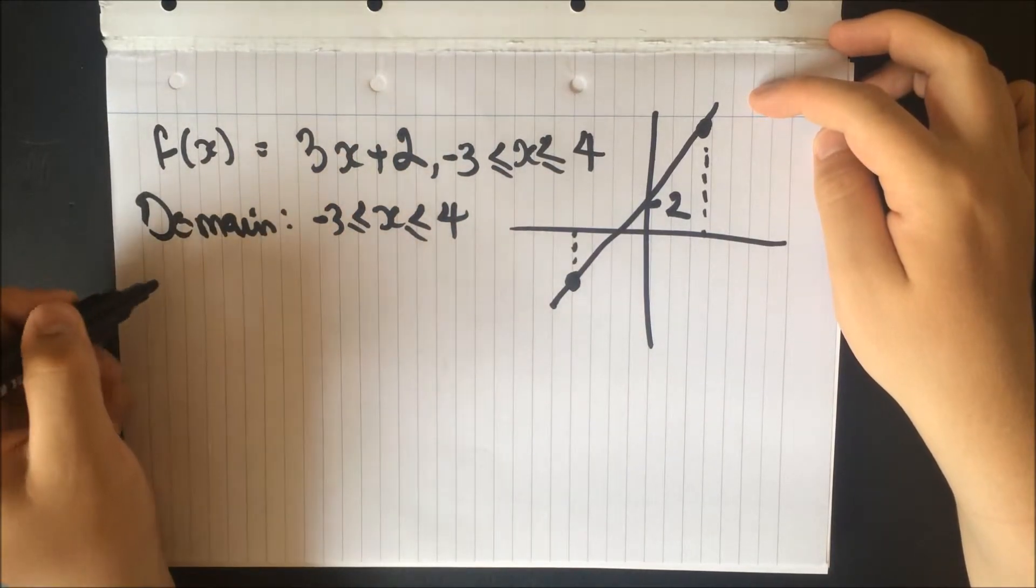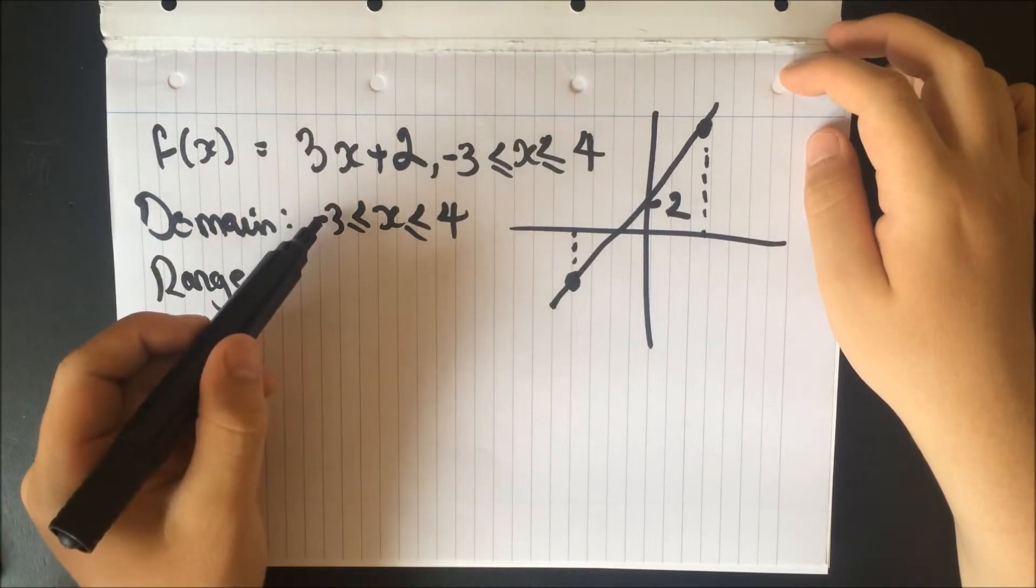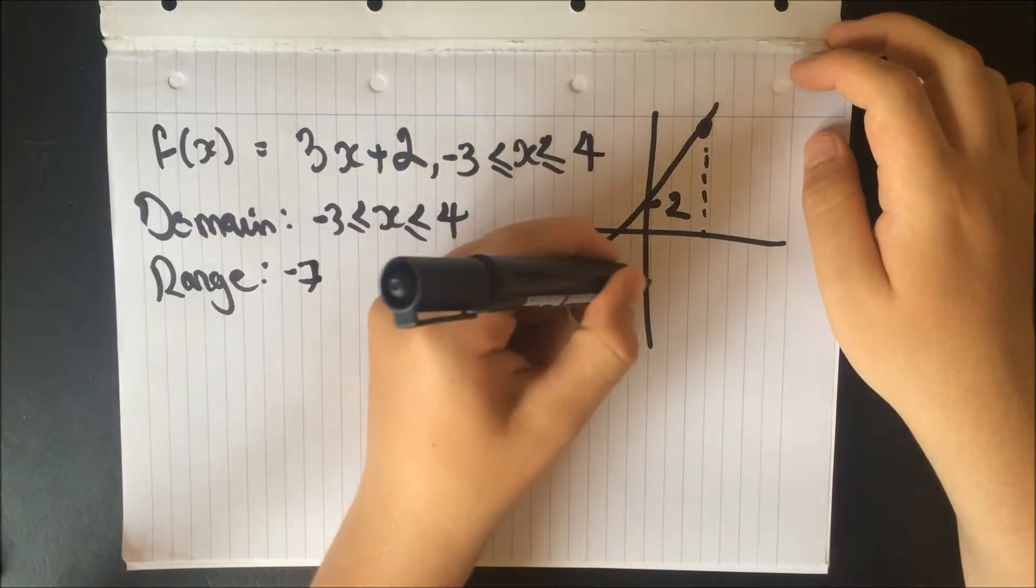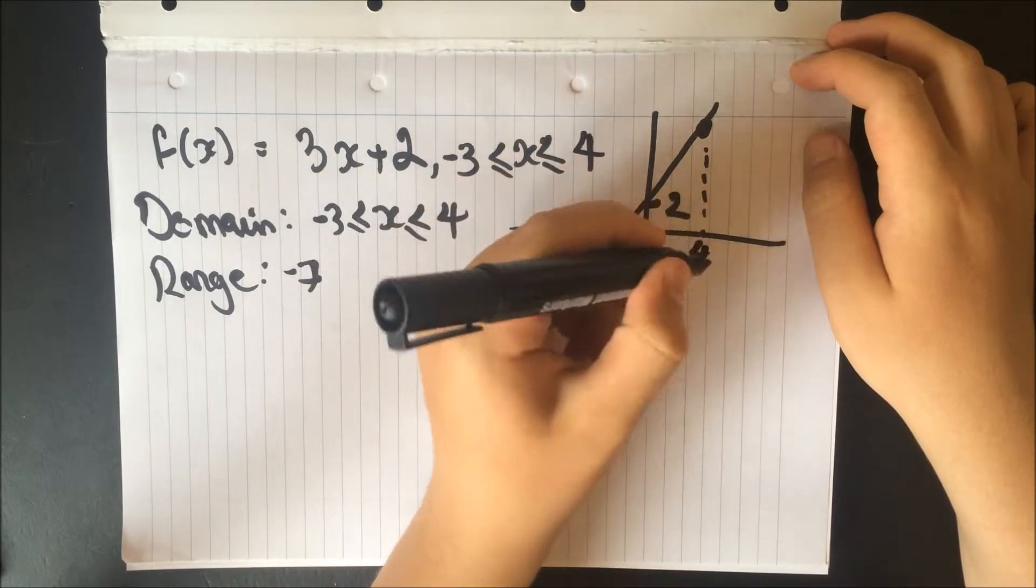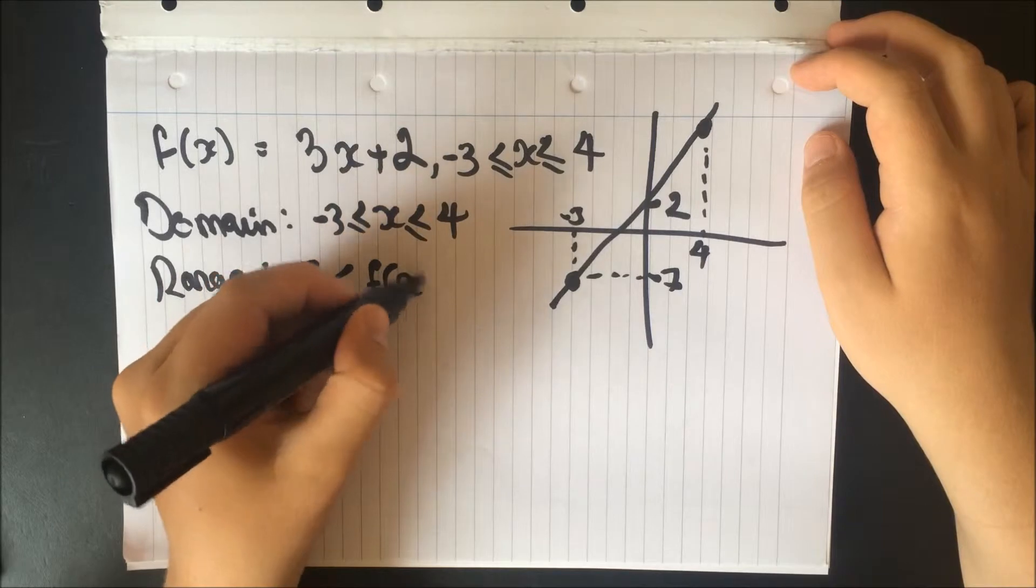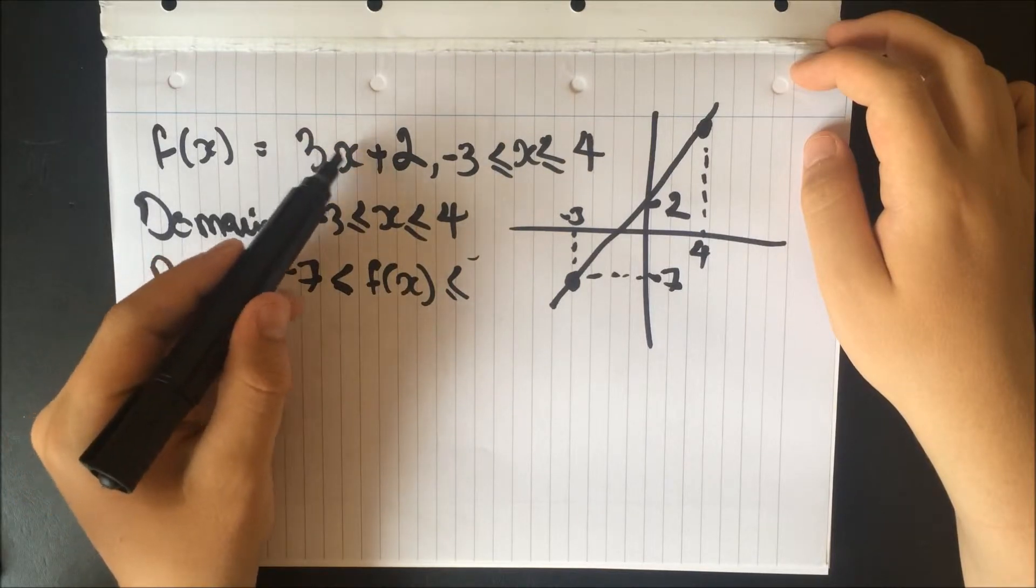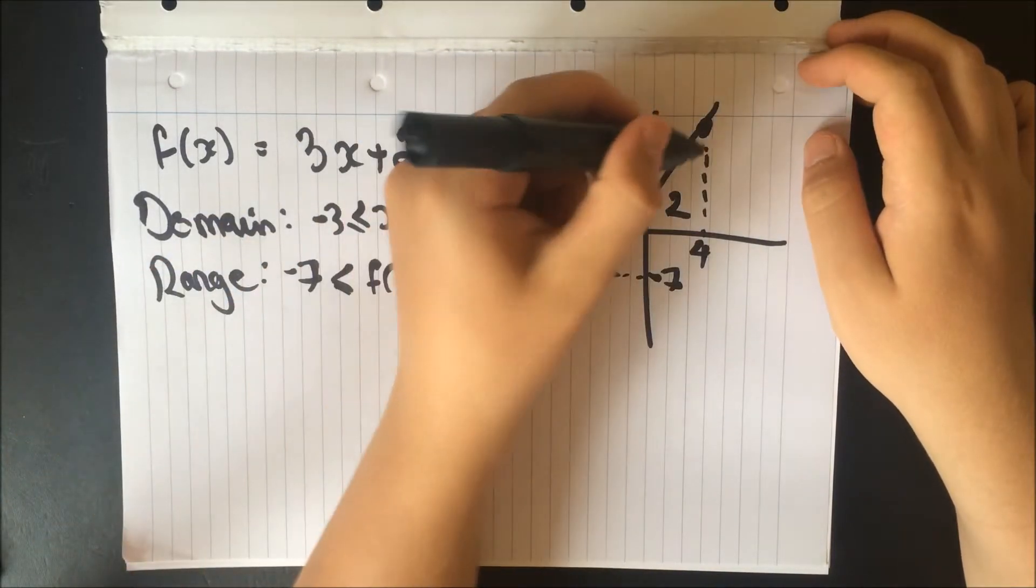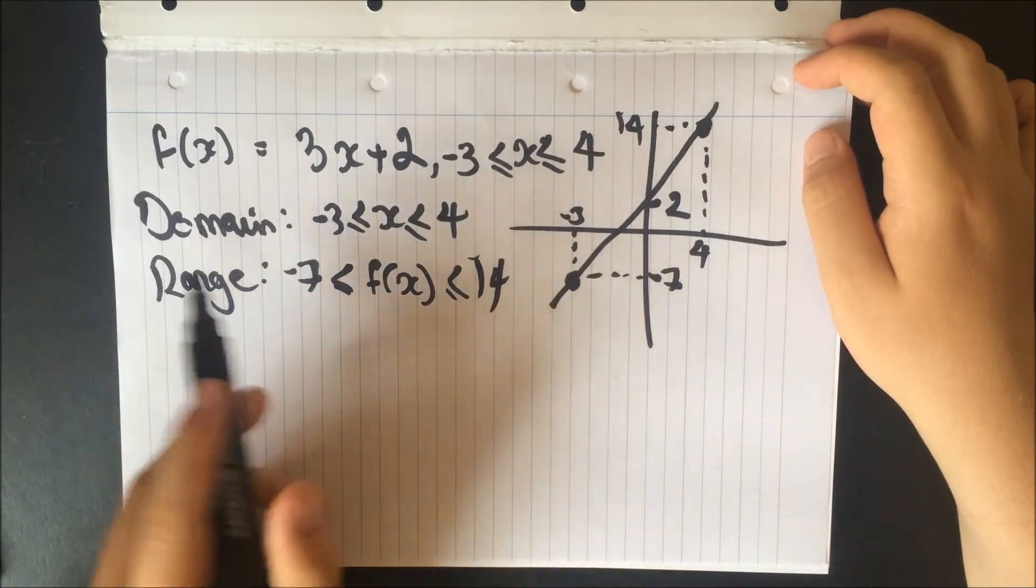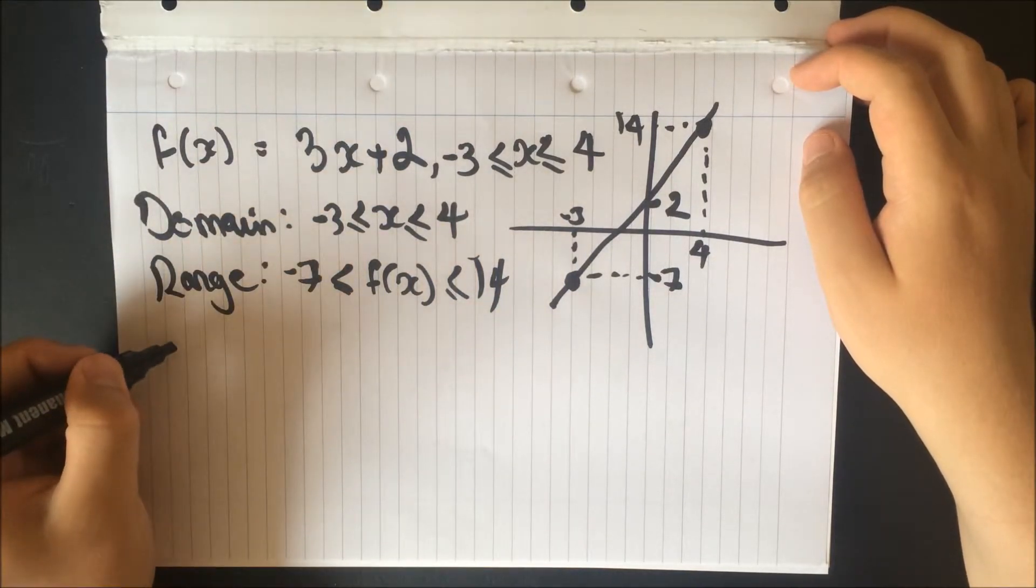So the domain, therefore, will be just that restriction. The domain is minus 3 to 4. And then to work out the range, we've got to see what values these give us. Well, minus 3, if we put that into there, minus 3 times 3 is minus 9, plus 2 is minus 7. So this point, this point is minus 3, this point is 4. So this point would be minus 7. And then if we put 4 into our equation, 4 times by 3 is 12 plus 2 is 14. So we could put that into there. So we can see that our range will be restricted because the domain's been restricted.